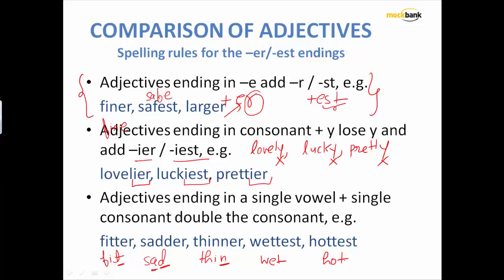In fit, sad, thin, wet, and hot, the last letter is a consonant and the second last alphabet is a vowel. And if you are going to make comparative and superlative of such adjectives, this last consonant will be added. So fit becomes fitter and fittest. Sad becomes sadder. Can you see that there is additional D here, additional T here. Thin becomes thinner, additional N. Wet becomes wettest, additional T has been brought. How about hot? Hottest, additional T has been brought.